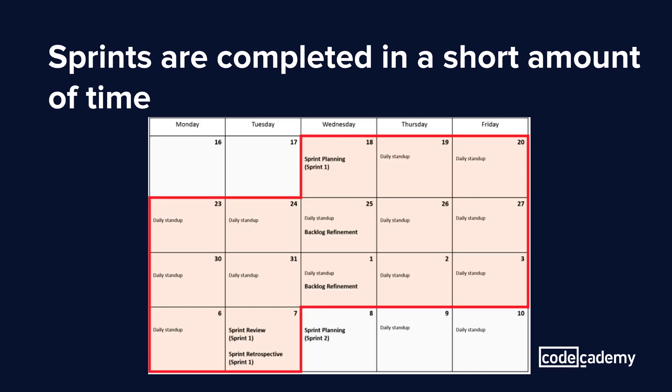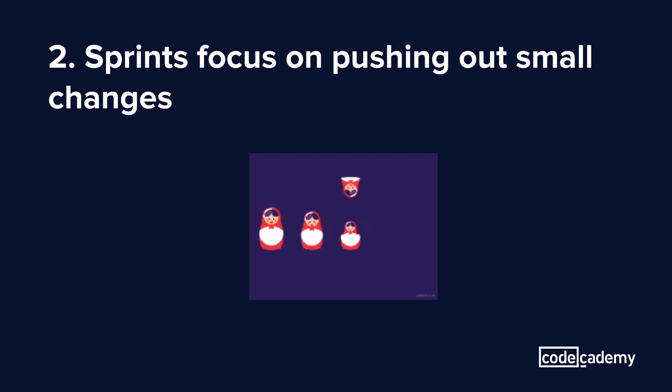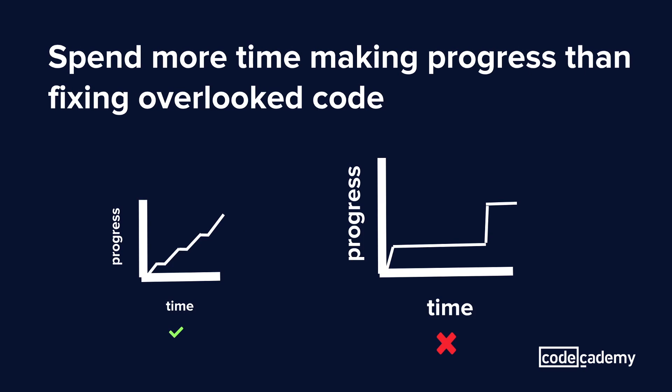Sprints can last anywhere between a week to a month. I've typically seen them occur within two weeks. By limiting the time frame, it forces the planners to stick to small iterative changes so that you don't have a lot of massive features or too many changes going out at once. This allows clients to get a more seamless experience as they're transitioning to newer versions of the product, and it also helps expedite releases.